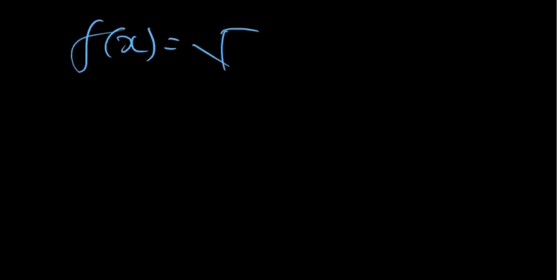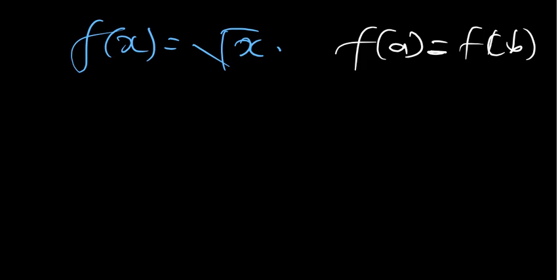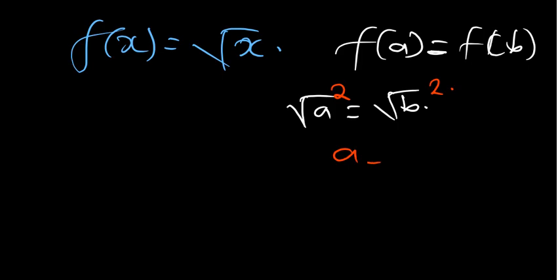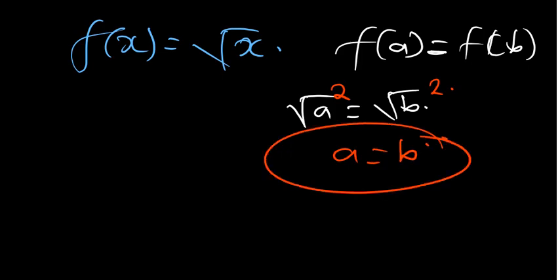One more example: f(x) = √x. Let's see if this function is one-to-one. A function is one-to-one if f(a) = f(b), so √a = √b. Squaring both sides to remove the square root, we find a = b. So this function is one-to-one.